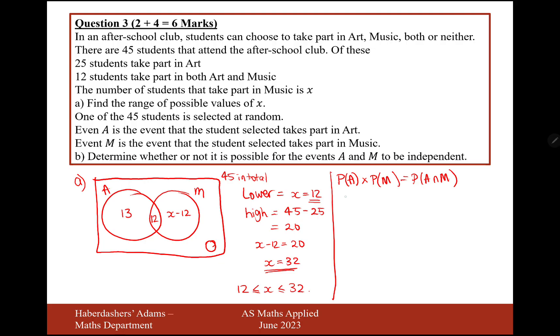So probability of A is 25 over 45. The probability of A and M is 12 out of 45.